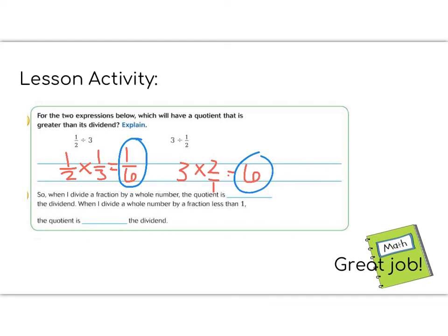So when I divide a fraction by a whole number, a fraction divided by a whole number, that's the first example, then I get a number that is less than what I started with. One-sixth is less than one-half. But when I divide a whole number by a fraction less than one, then the quotient is going to be greater than the dividend. You fill in the blank on your page and be prepared to show your teacher tomorrow.